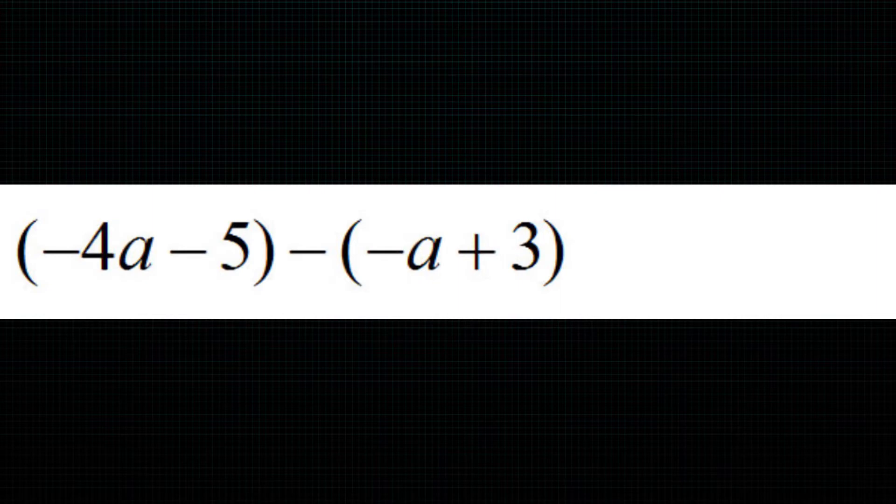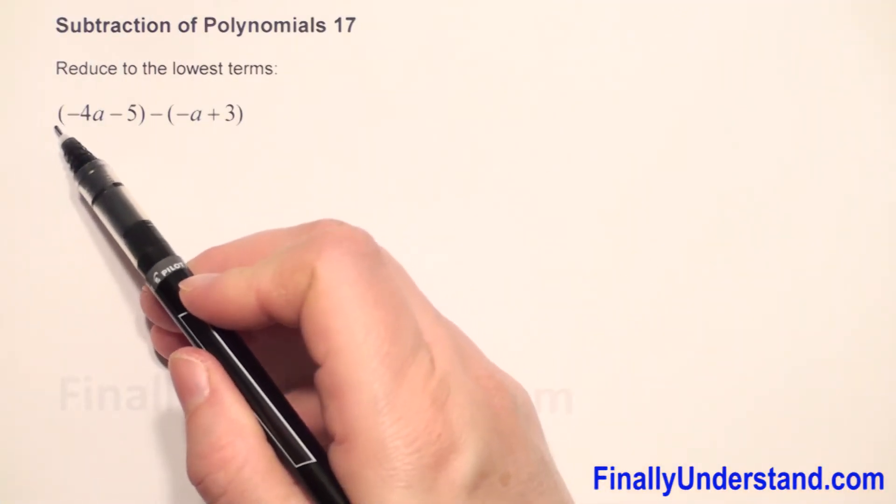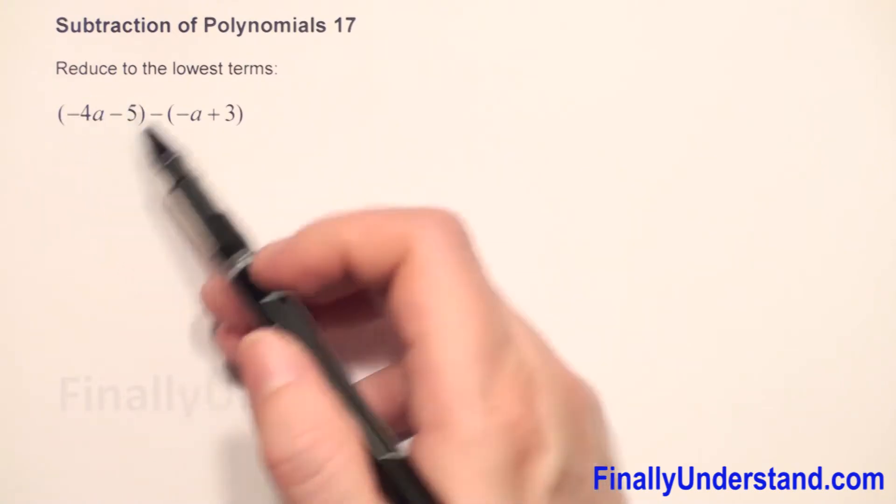We have subtraction of polynomials. How do we do this? First, we have to take down the parentheses. When we don't have any sign before parentheses, we just have to rewrite whatever we have inside.